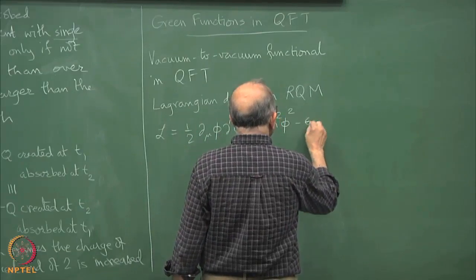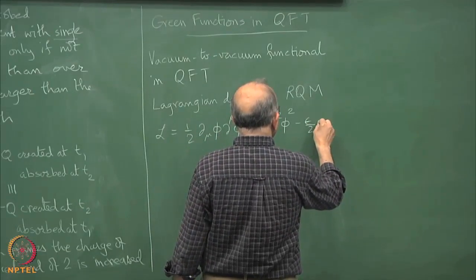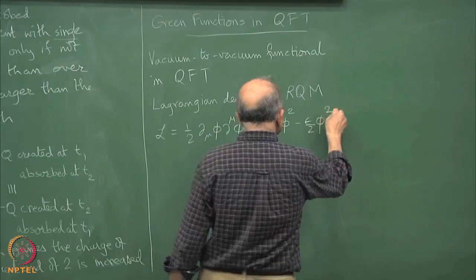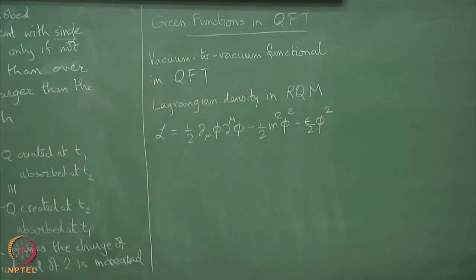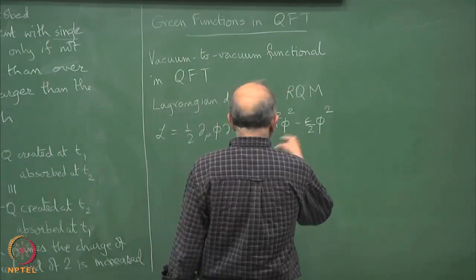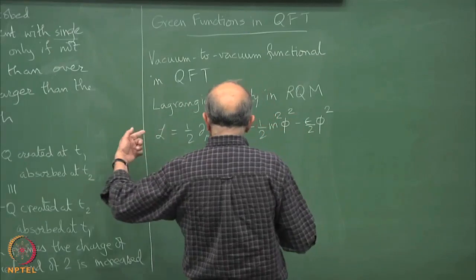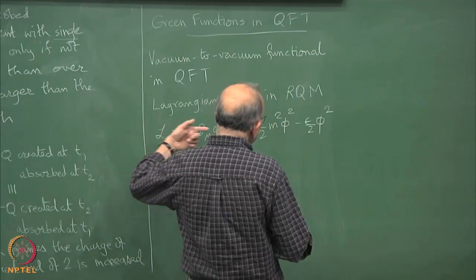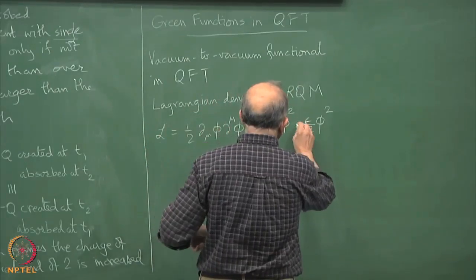and the m square will be, so we can put minus epsilon by 2 phi square plus I. At this level it is minus, so if I multiply by I, it should become minus, so it is plus I.